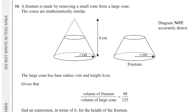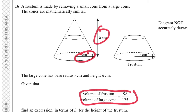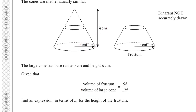In question 16, the frustum is made by removing a small cone from a large cone. The cones are mathematically similar, with the large cone having radius r and height h. Given that the volume of the frustum to the volume of the large cone is 90 to 125, we need to find an expression in terms of h for the height of the frustum. The volume of the frustum is simply the volume of the large cone minus the volume of the small cone.